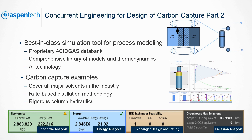AspenTech uses proven volumetric cost modeling methods to evaluate costs. Energy analysis applies proven heat pinch methods to evaluate energy efficiency. Rigorous exchanger design and rating is based on AspenTech's leading heat exchanger models. The simulator also reports greenhouse gas emission results in terms of CO2 equivalents of Global Warming Potential (GWP). Once satisfied, we can send the flowsheet along with the simulation information to Aspen Basic Engineering by clicking the datasheet button.